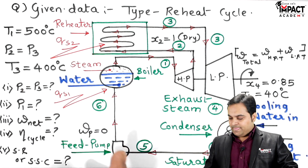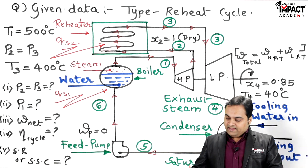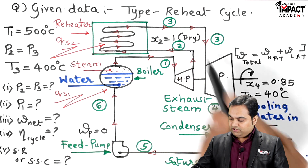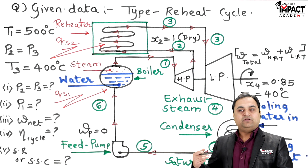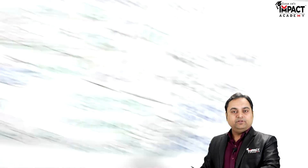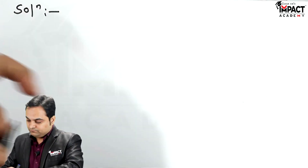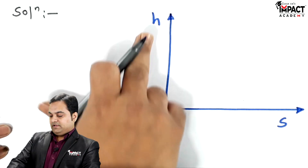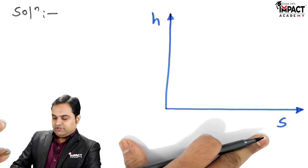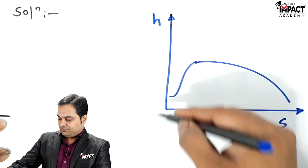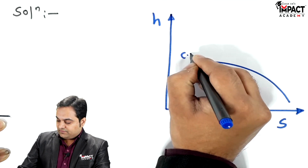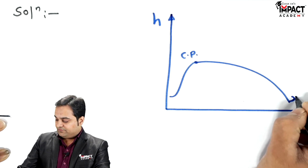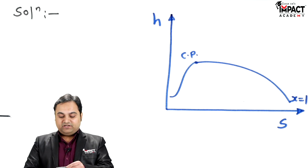Once the problem setup is understood, I'll draw the H-S diagram, which is the Mollier chart. There are six major points — 1, 2, 3, 4, 5, and 6 — and all six enthalpies need to be calculated. On the H-S diagram, enthalpy is in kJ/kg and entropy is in kJ/kg·K. The saturation curve is shown with the critical point where phase transformation takes place — liquid line on the left, vapor line on the right where x equals 1.